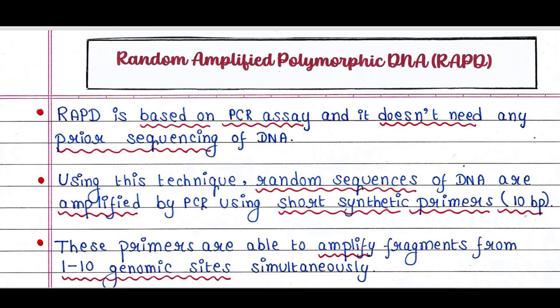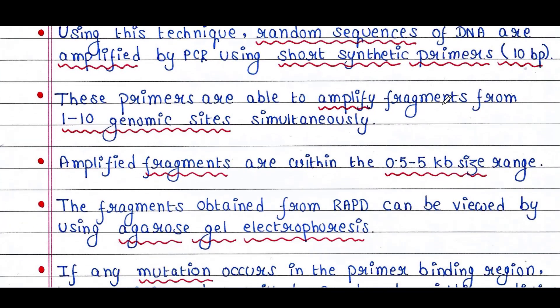These primers are able to amplify fragments from 1 to 10 genomic sites simultaneously. Since these are non-specific primers annealing randomly, they are capable of annealing to multiple sites of DNA simultaneously. It can vary from 1 to 10 sites at a time. Amplified fragments are within the 0.5 to 5 kb size range.